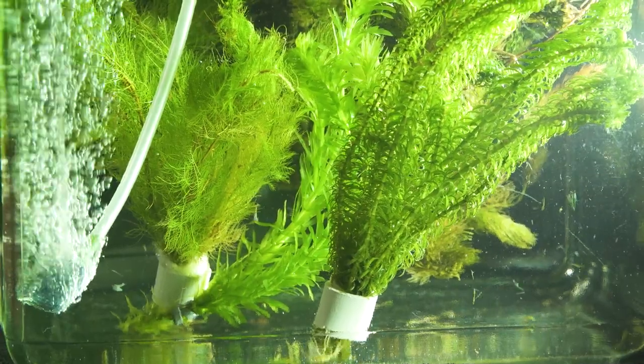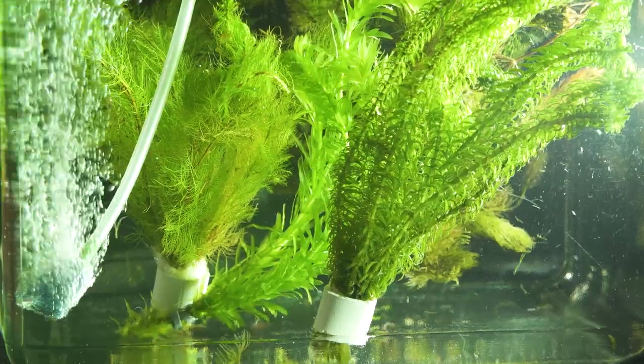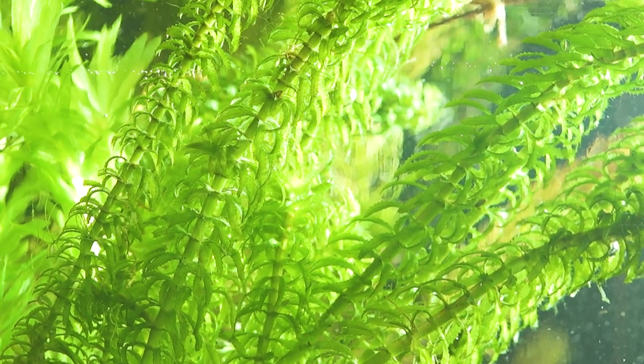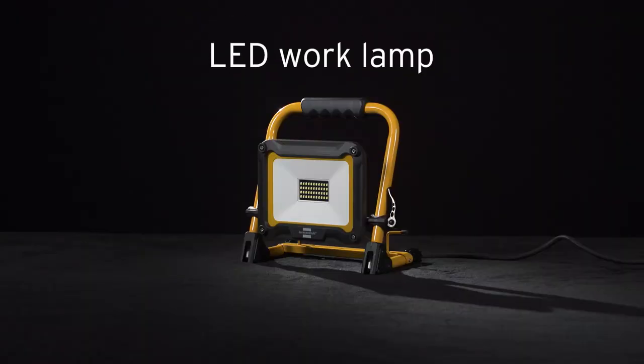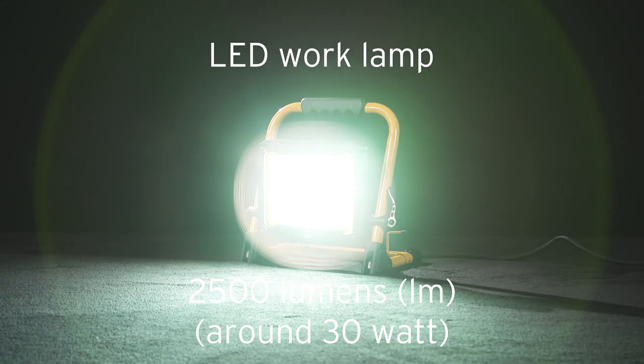If you're keeping any pondweed in a tank for longer than a couple of days, you may want to purchase a very bright light with a rating of over 2,500 lumens, such as an LED work lamp, to ensure it stays healthy. These work lamps can be bought from hardware suppliers. As a guide, look for LED lamps labelled 30 watts, but always check the lumen rating to be sure.